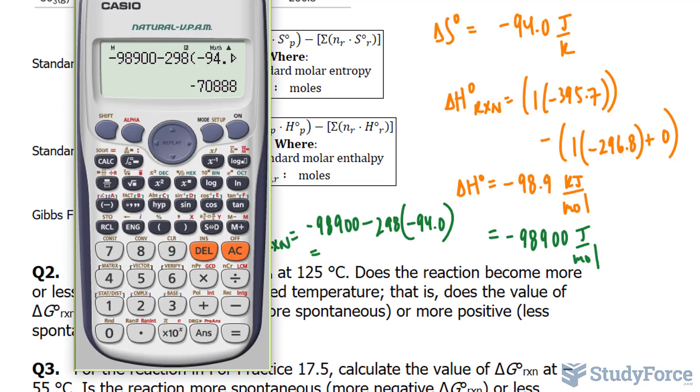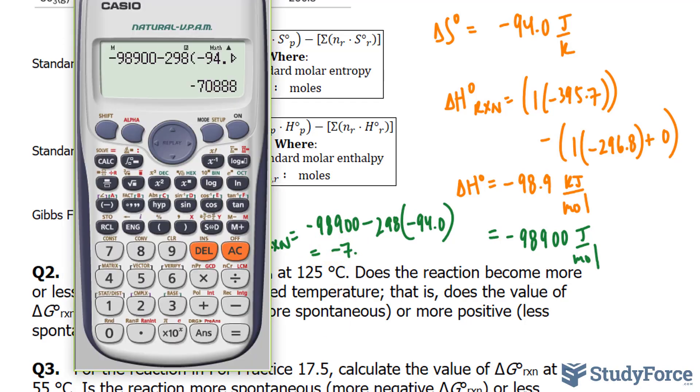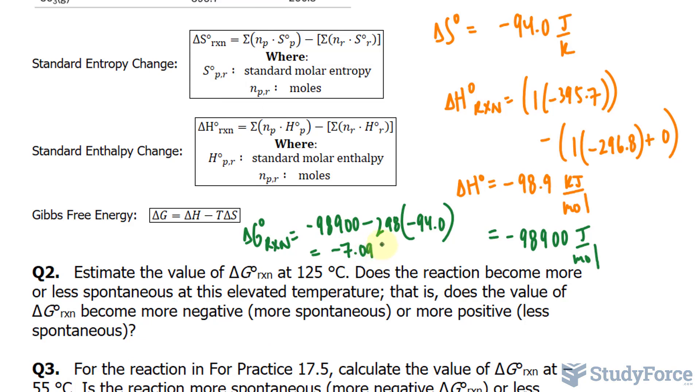Let me write that down to three significant figures: negative 7.09 times 10 to the power of 5, and the units are joules. So we can conclude that the reaction at this temperature happens to be spontaneous.